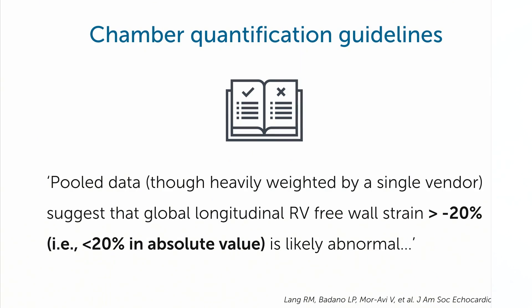There are recently published guidelines for cardiac chamber quantification. They were published before the publication of the recent reference study, and we can see from there that the suggested global longitudinal RV free wall strain more than minus 20 percent... so I mean minus 19, minus 18, minus 17 is likely to be abnormal.